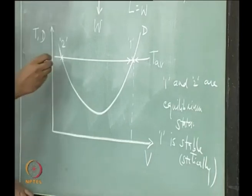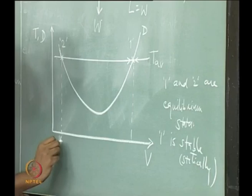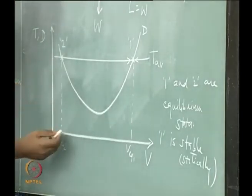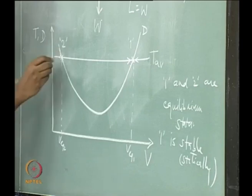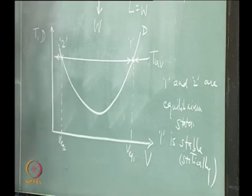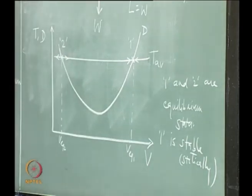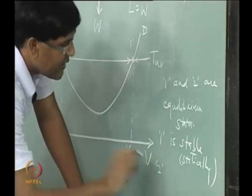Applying the same arguments to equilibrium state 2: if speed decreases, drag is more than thrust available, so the aircraft decelerates further away from equilibrium. On the other side, a speed increase also takes the aircraft away from equilibrium state 2. So this equilibrium condition is statically unstable with respect to change in speed due to disturbance.